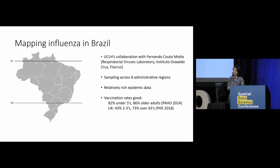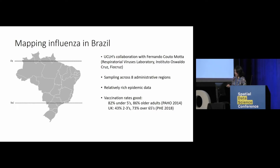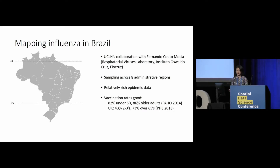By combining genome information and spatial analysis, I'd like to introduce two ongoing use cases. The first one is mapping flu in Brazil. We did this collaboration with samples from eight administrative regions. Brazil has really rich epidemic data, which is very helpful. They also have very high vaccination rates for flu — above 80% for small children and elderly people, who are at easy risk for flu — compared to the UK, where we only have 43% for young children and 73% for elderly people.